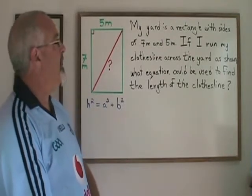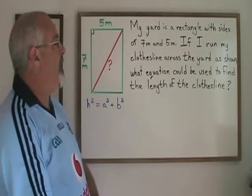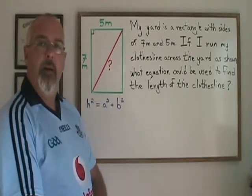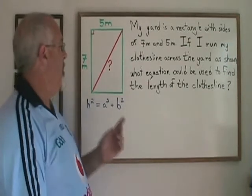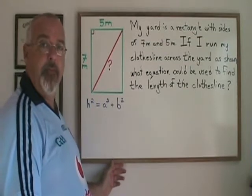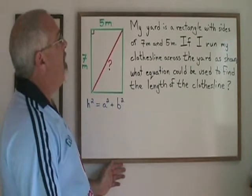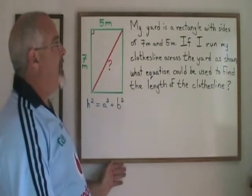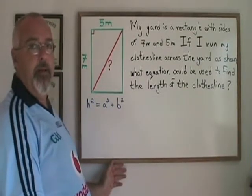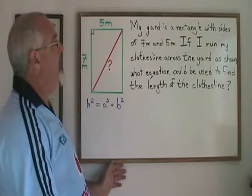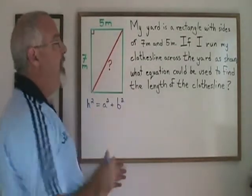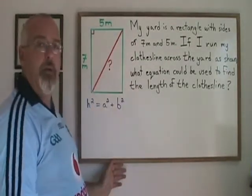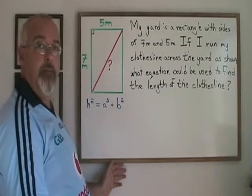This situation is asking us to give a mathematical equation that could be used to solve a problem, and that involves the Pythagorean theorem. My yard is a rectangle with sides of 7 meters and 5 meters. If I run my clothesline across the yard diagonally, what equation could be used to find the length of the clothesline?